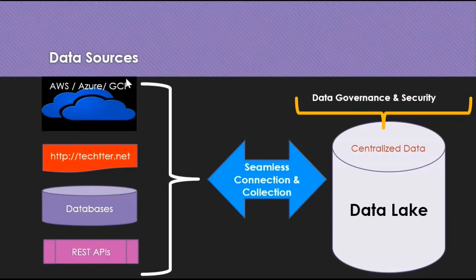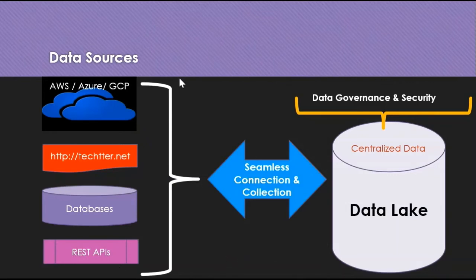You should be able to connect all these data sources regardless of the volume, variety, and velocity of data. You should have proper tools in your organization to handle this connectivity. You can use streaming frameworks like Apache Spark, or smaller streaming applications that connect to these data sources and store data in a central location.